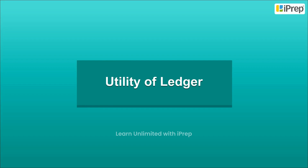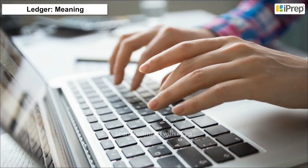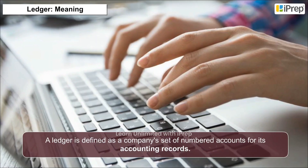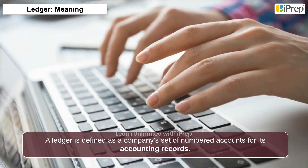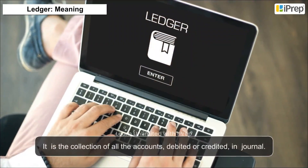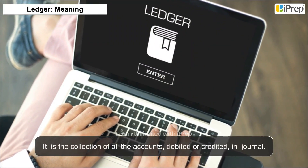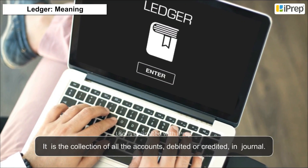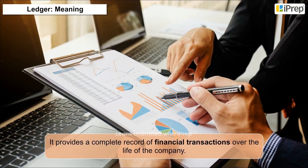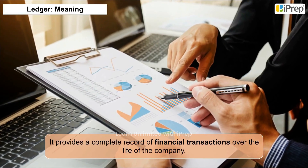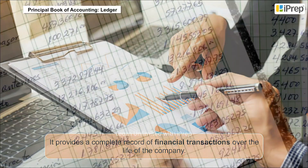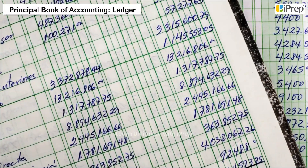A ledger is defined as a company's set of numbered accounts for its accounting records. A general ledger is the collection of all the accounts debited or credited in the journal proper and various special journals. It provides a complete record of financial transactions over the life of the company and is the principal book of accounting.